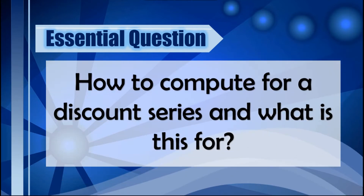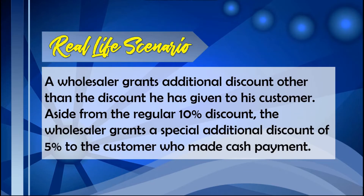To attain the learning objectives, our essential question is: how do we compute for a discount series and what is it for? Let us focus first on this real-life scenario. A wholesaler grants additional discounts beyond the regular 10% discount — for example, a special additional discount of 5% to customers who make cash payment. In this example, the discount series is 10% and 5%.